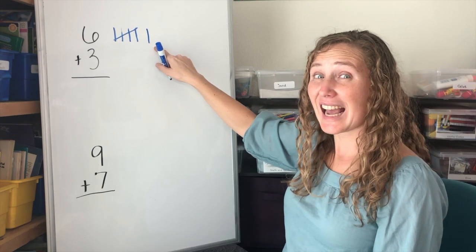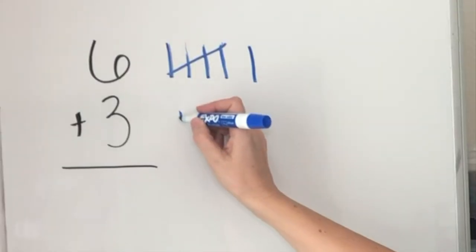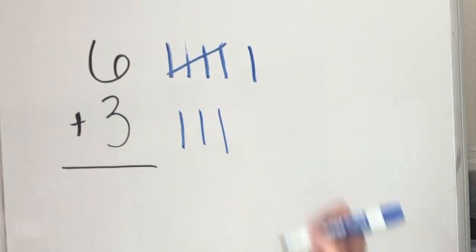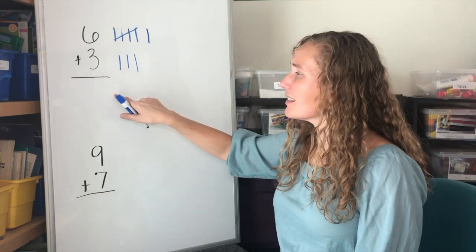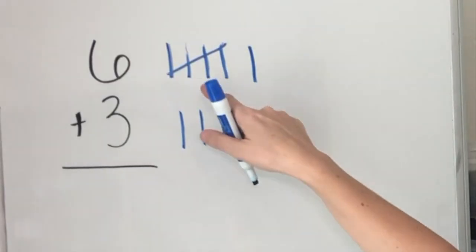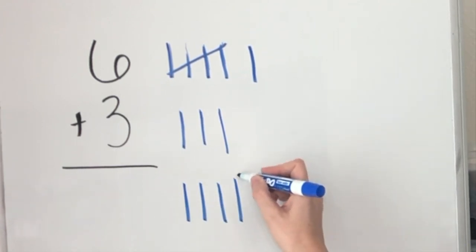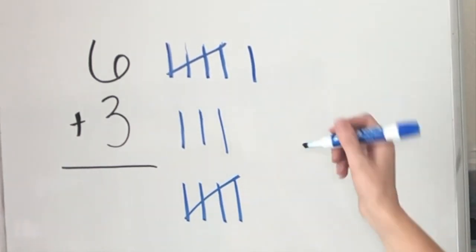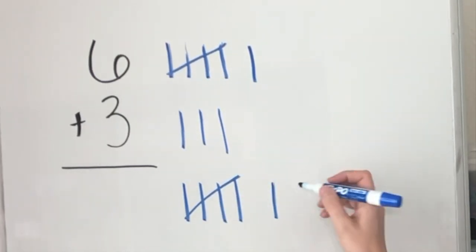Now let's make three tally marks. One, two, three. Six and three. Let's group those tally marks together. We have one group of five. One, two, three, four, five. We have a tally mark by itself and then three tally marks by themselves. One, two, three.